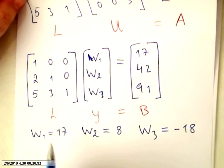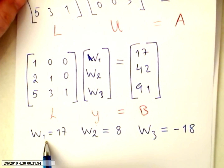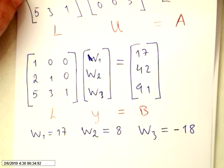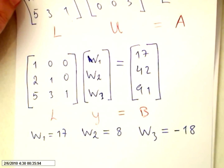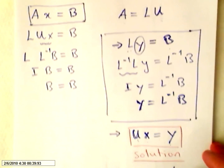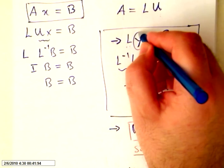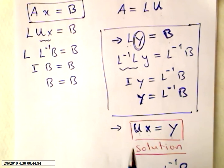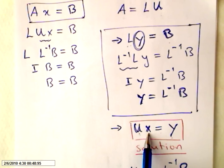These values: W1 = 17, W2 = 8, and W3 = minus 18. This is the Y matrix. Now what we have to do is upper times the variables equals Y.